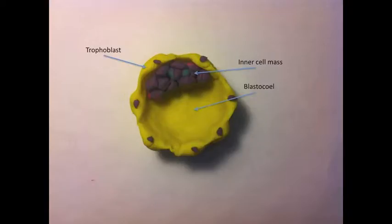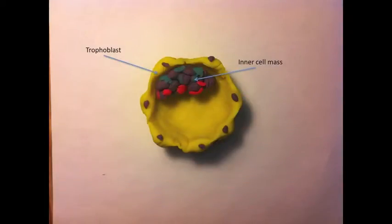The blastocyst, characterized by a blastocele following cavitation of the morula, first consists of an inner cell mass surrounded by trophoblast cells.